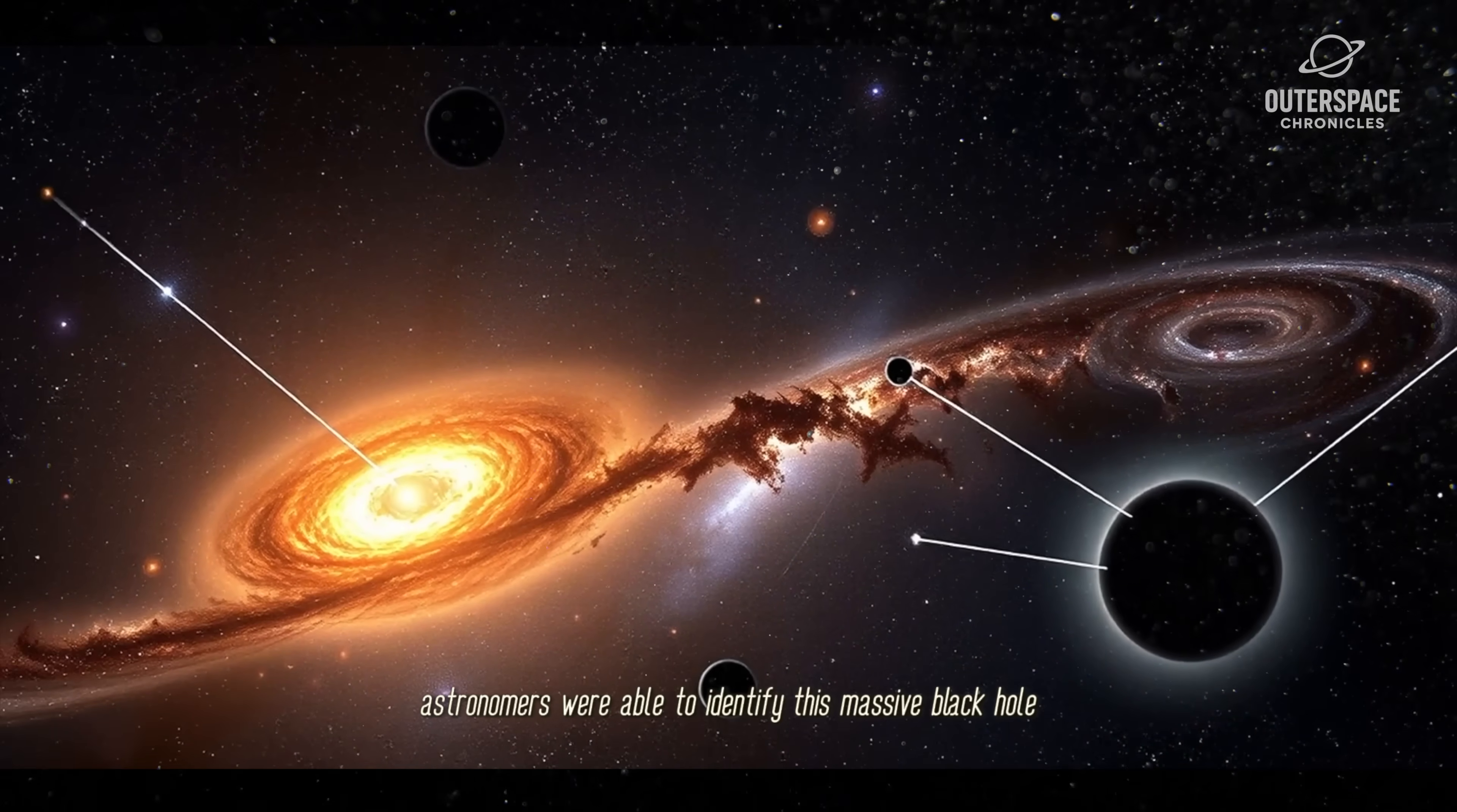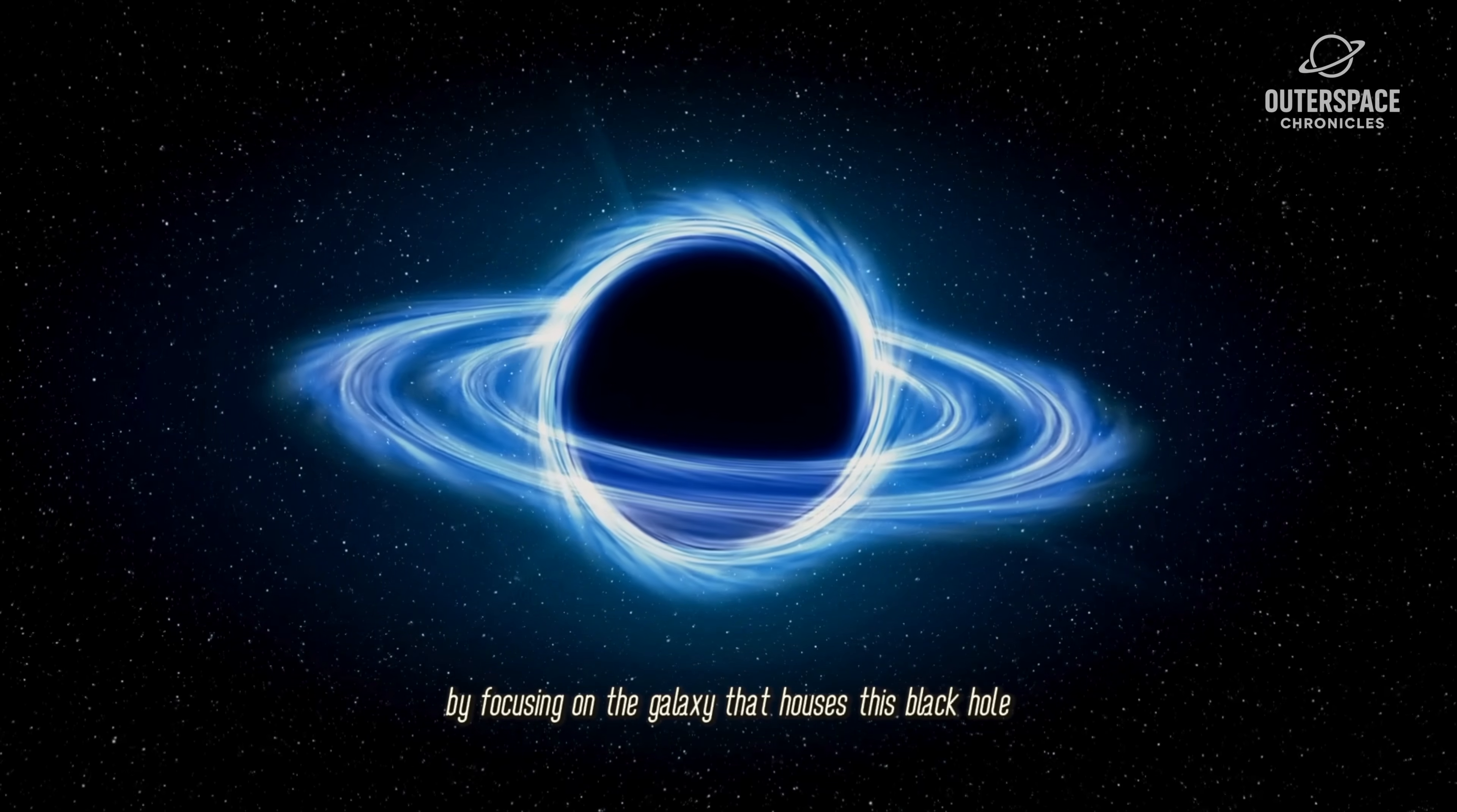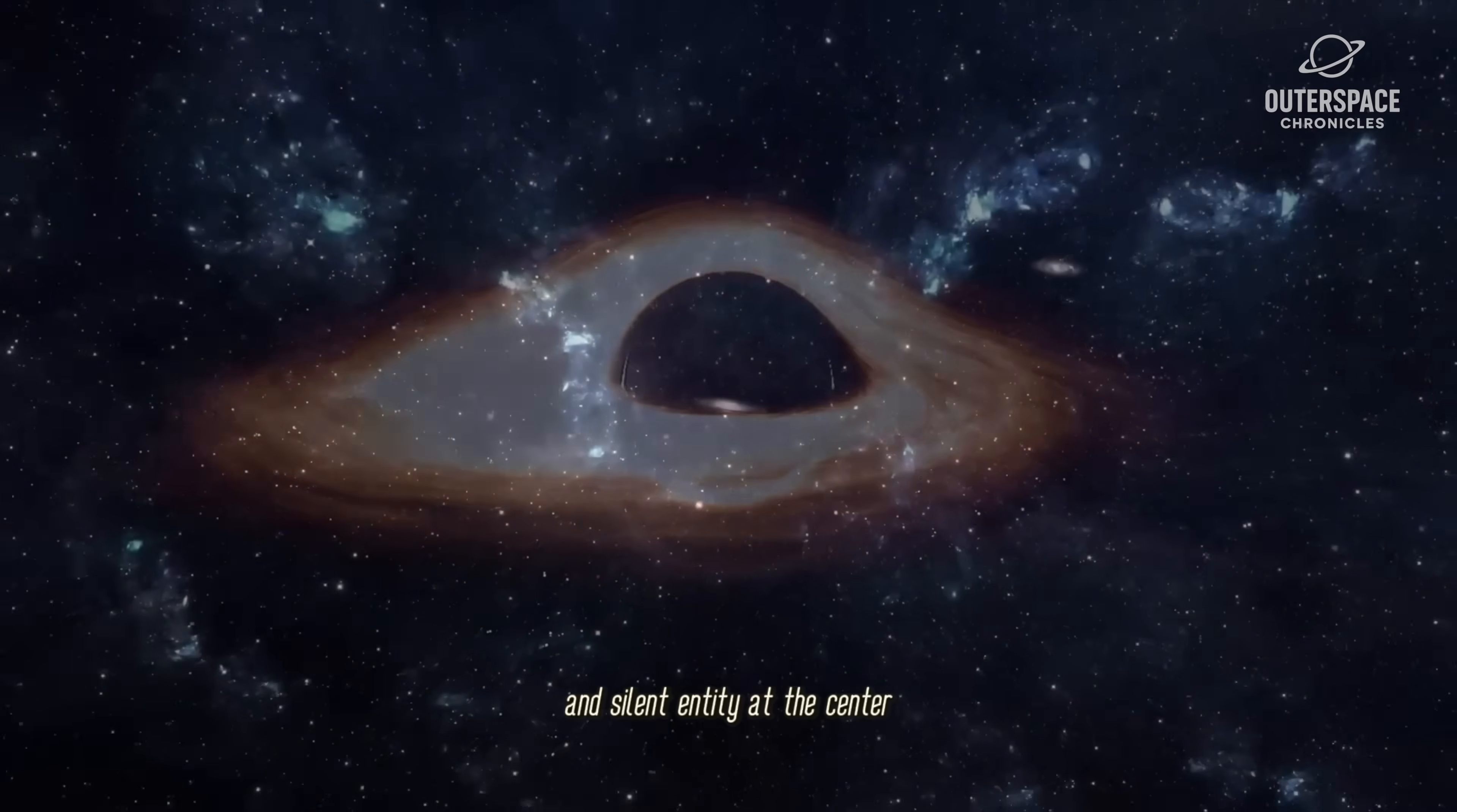Astronomers were able to identify this massive black hole by utilizing the advanced capabilities of the Webb Telescope, which employs infrared light to penetrate cosmic darkness. By focusing on the galaxy that houses this black hole, researchers meticulously examined the light patterns emitted from the galaxy. These patterns revealed unusual signatures that suggested the presence of a large and silent entity at the center.